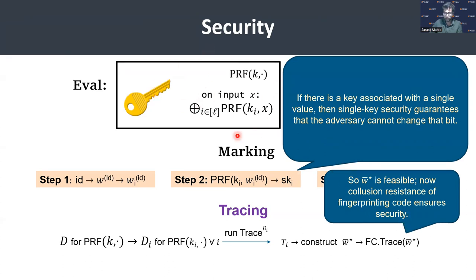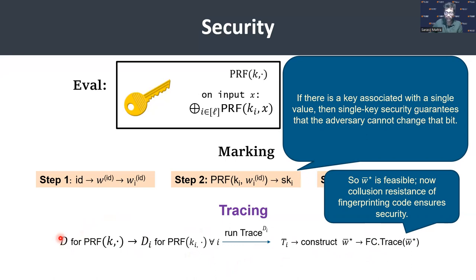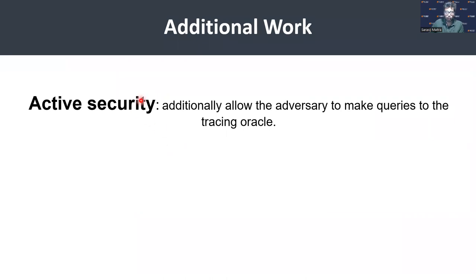To recap the construction: the eval algorithm takes L independent copies of the single-key traceable PRF and XORs them. The marking algorithm maps an identity to its codeword, embeds each bit using the corresponding PRF copy, and outputs the tuple as the marked key. The tracing algorithm constructs a per-component distinguisher D_i, runs the trace algorithm for each, constructs W*, and feeds it to the fingerprinting code's trace algorithm. We also provide a statistical test in the paper to check the efficacy of the distinguisher, which is also needed in the security proof.